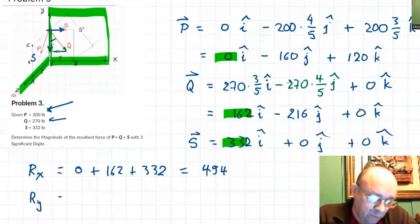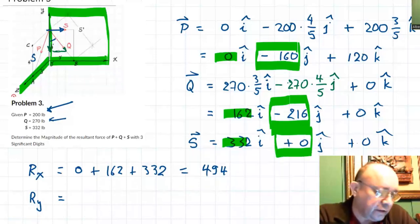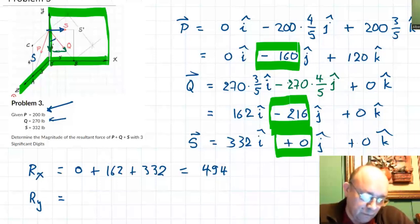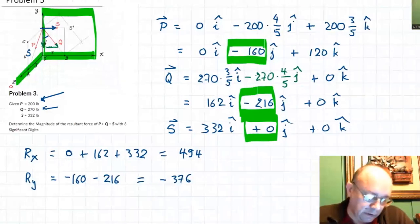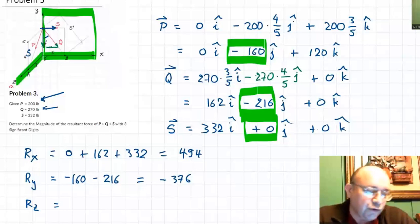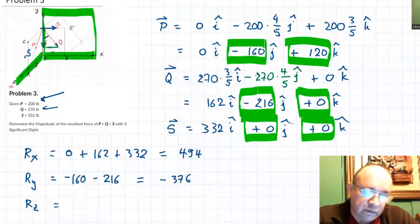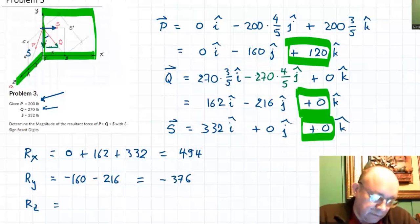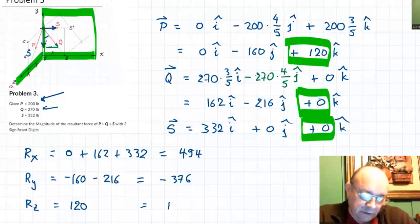Ry equals the sum of the y-components: minus 160, minus 216, plus zero — that gives minus 376. Rz equals the sum of the z-components: 120 plus 0 plus 0 equals 120. So the resultant components are Rx equals 494, Ry equals minus 376, Rz equals 120.